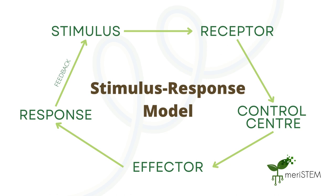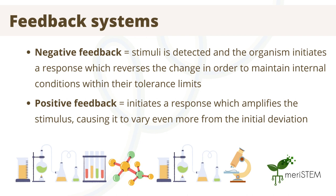There are two types of response which determine how the organism responds to the change in stimuli. The first is negative feedback, which is where a change in stimuli is detected and the organism initiates a response which reverses the change, in order to maintain internal conditions within their tolerance limits. This is what we see in thermoregulation, insulin release in blood glucose regulation, as well as in osmoregulation, which will be explained in later videos.